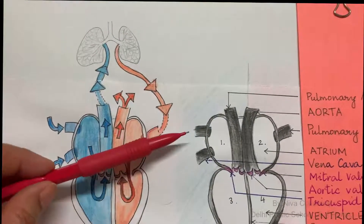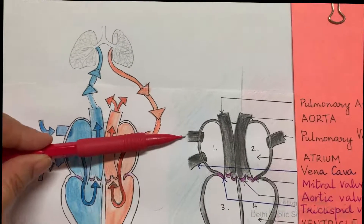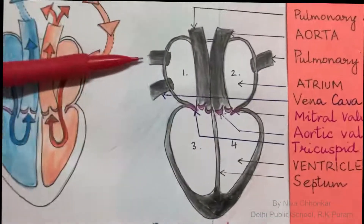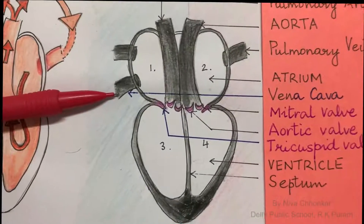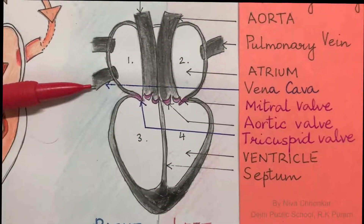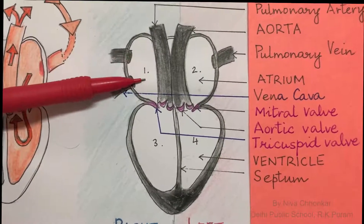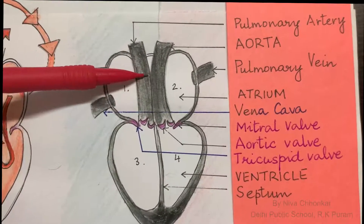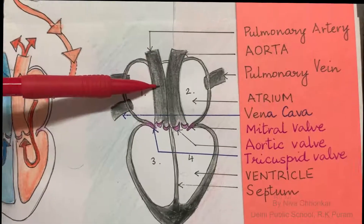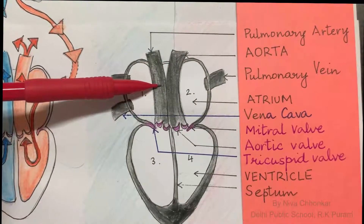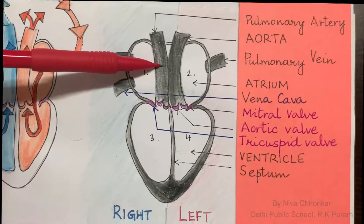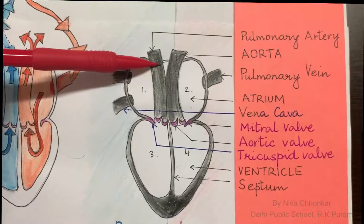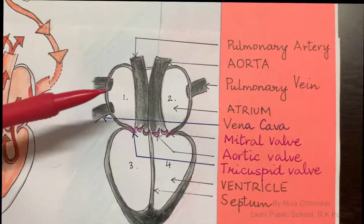The upper chamber, the atrium, is supplied by blood vessels: the superior vena cava, which brings deoxygenated blood from the upper part of the body, and the inferior vena cava, which brings deoxygenated blood from the lower part of the body. This deoxygenated blood then moves into the lower chamber, the ventricle, and from there through the pulmonary artery. These arteries and veins are exceptional because normally an artery carries oxygenated blood, but in this case it carries deoxygenated blood.